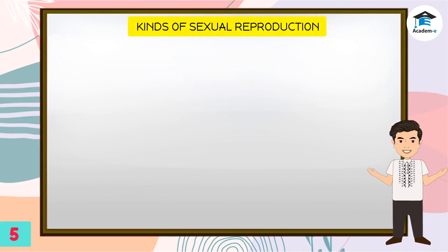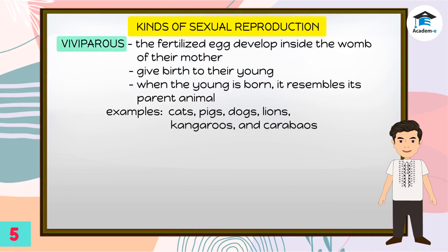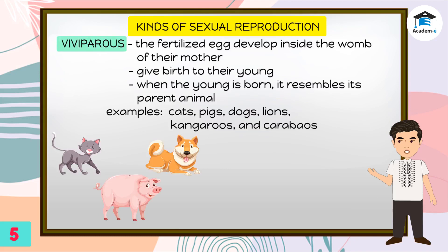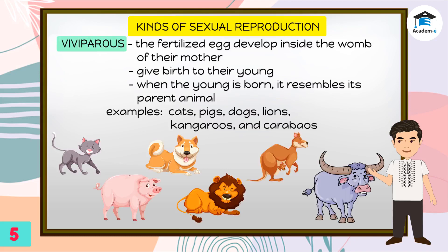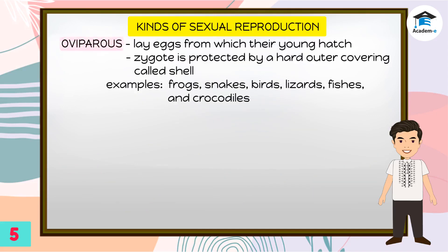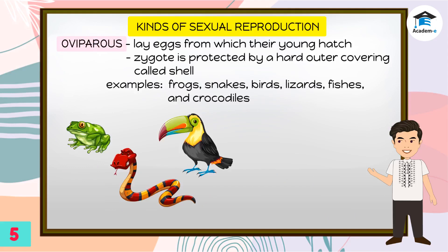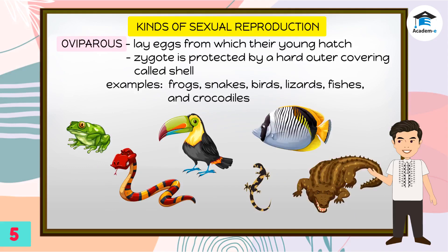There are two kinds of sexual reproduction. The fertilized eggs of some animals like cats, pigs, dogs, lions, kangaroos, and carabaos develop inside the womb of their mother. These animals give birth to their young, and when the young is born, it resembles its parent animal. These animals are described as viviparous. Some animals like frogs, snakes, birds, lizards, fishes, and crocodiles lay eggs from which their young hatch. These animals are described as oviparous. The zygote is protected by a hard outer covering called a shell.